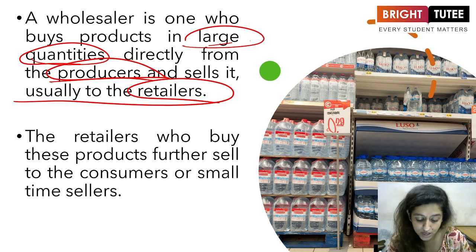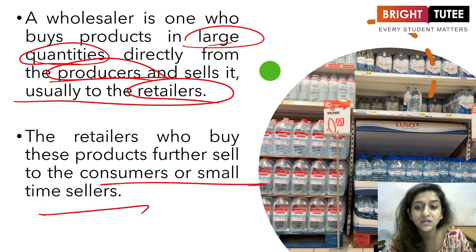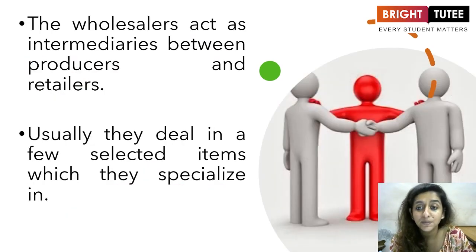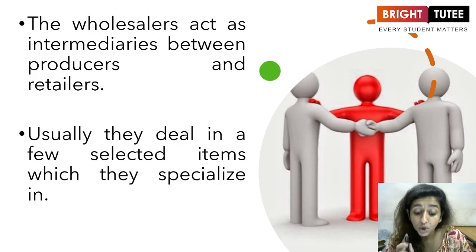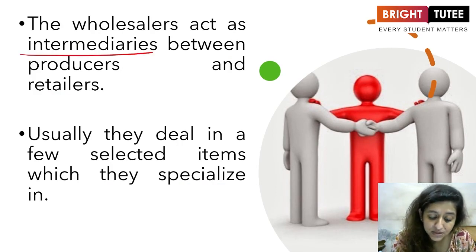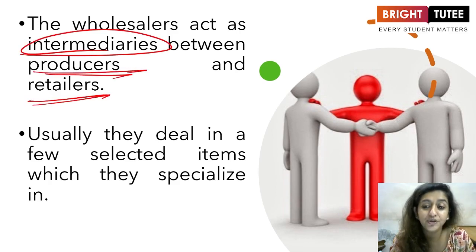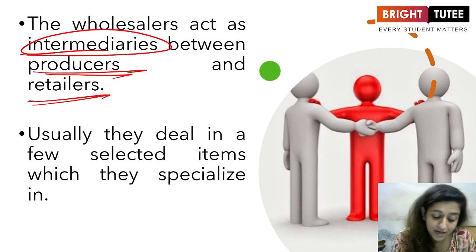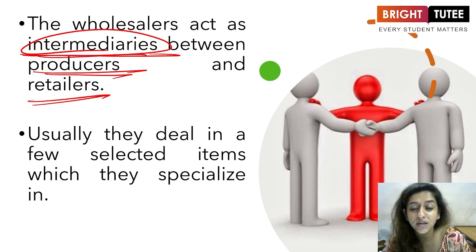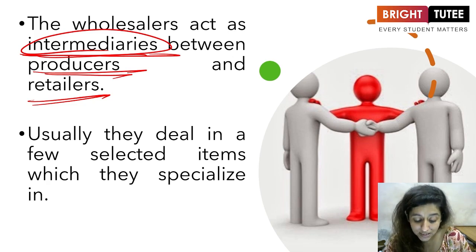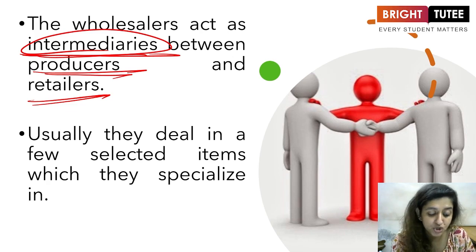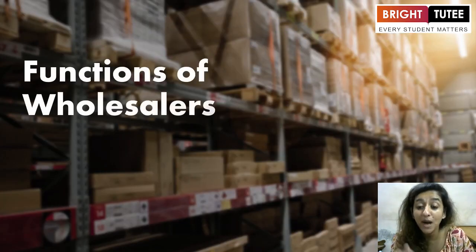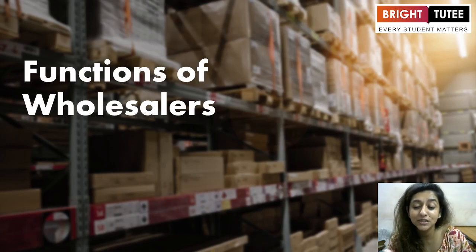Retailers who buy these products further sell them to the consumers or small-time sellers. The wholesalers act as intermediaries between the producers and the retailers. Wholesalers usually deal in few selected items which they specialize in only, since goods are to be bought in abundance.